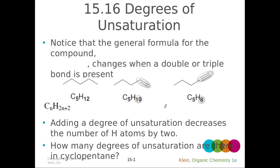Before we get started talking about mass spectrometry, I'd like to discuss degrees of unsaturation. Degrees of unsaturation is also abbreviated as HDI, which stands for hydrogen deficiency index, or it could be abbreviated DU for degrees of unsaturation, or ring plus double bond — the number of rings and number of double bonds in a molecule. That's exactly what degrees of unsaturation represents: how many rings and how many double bonds do we have in a molecule.